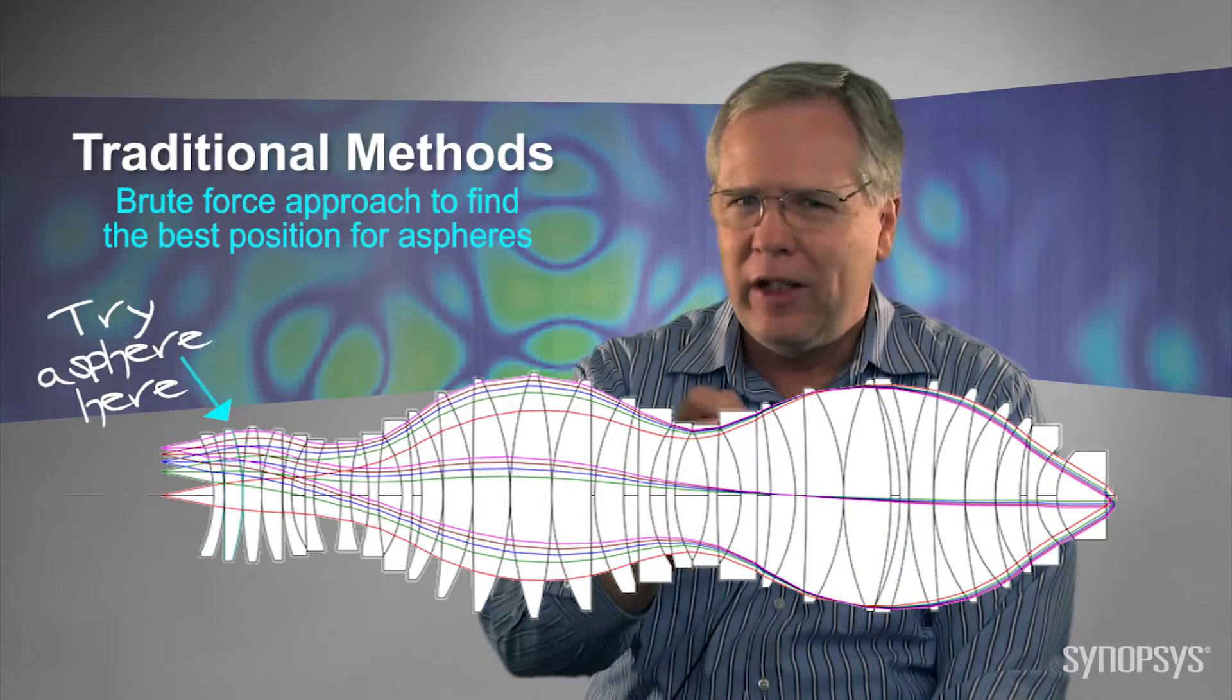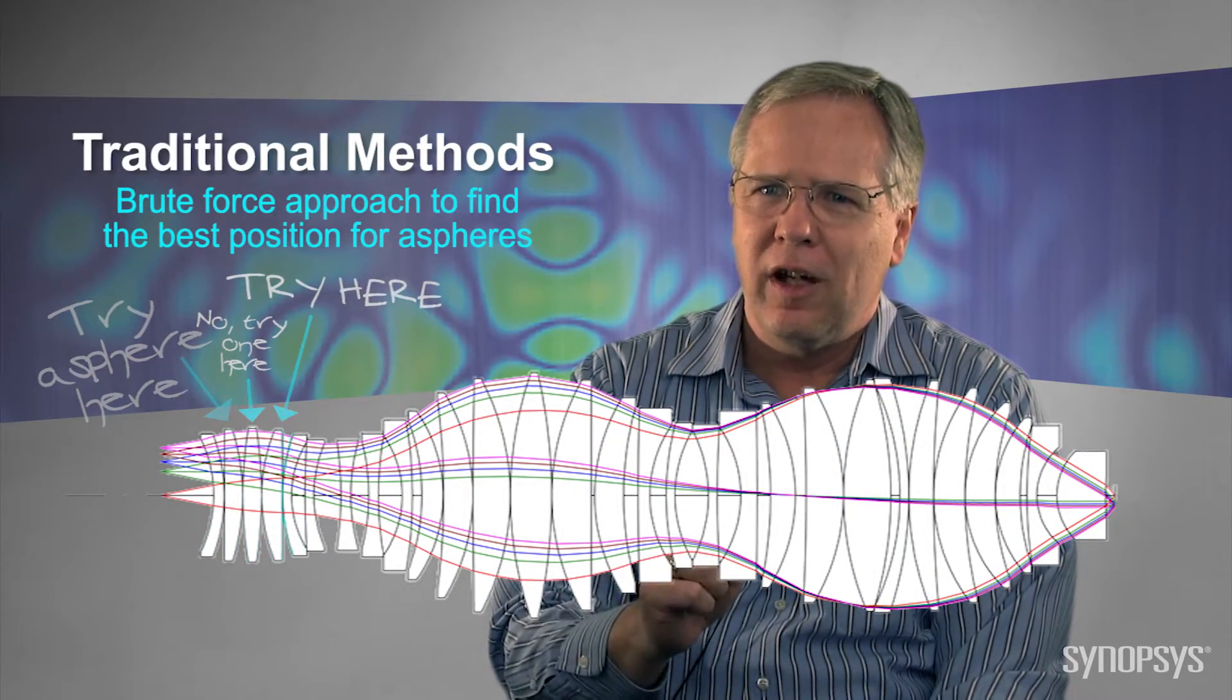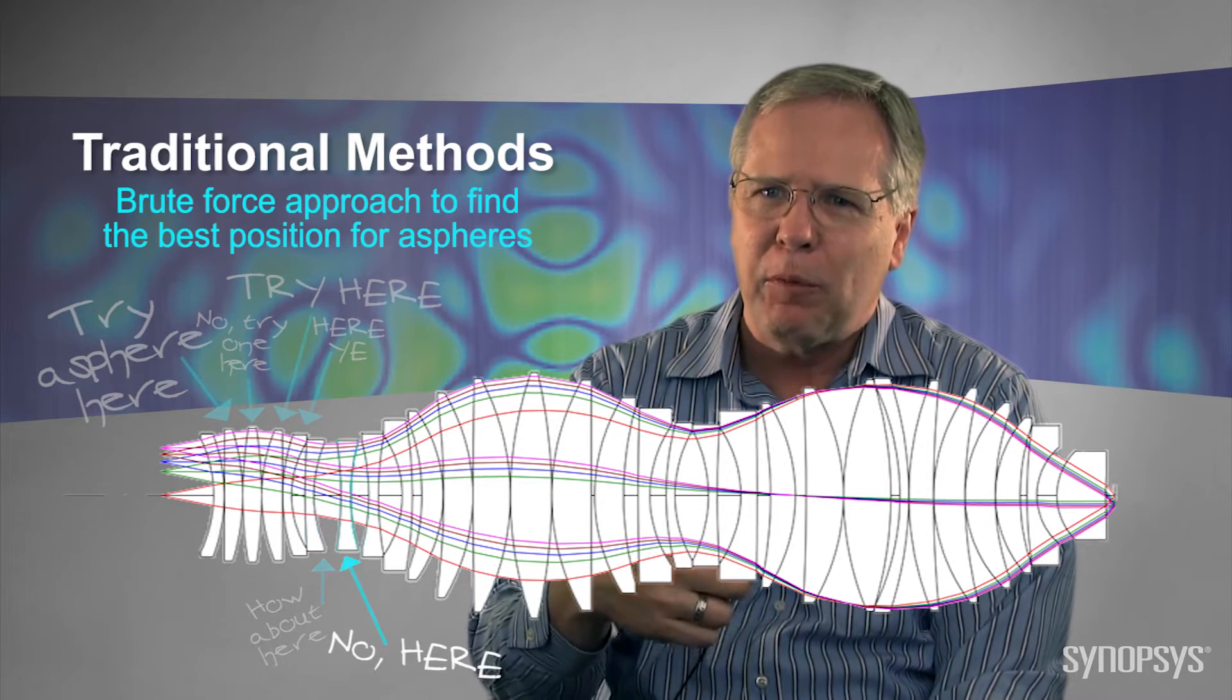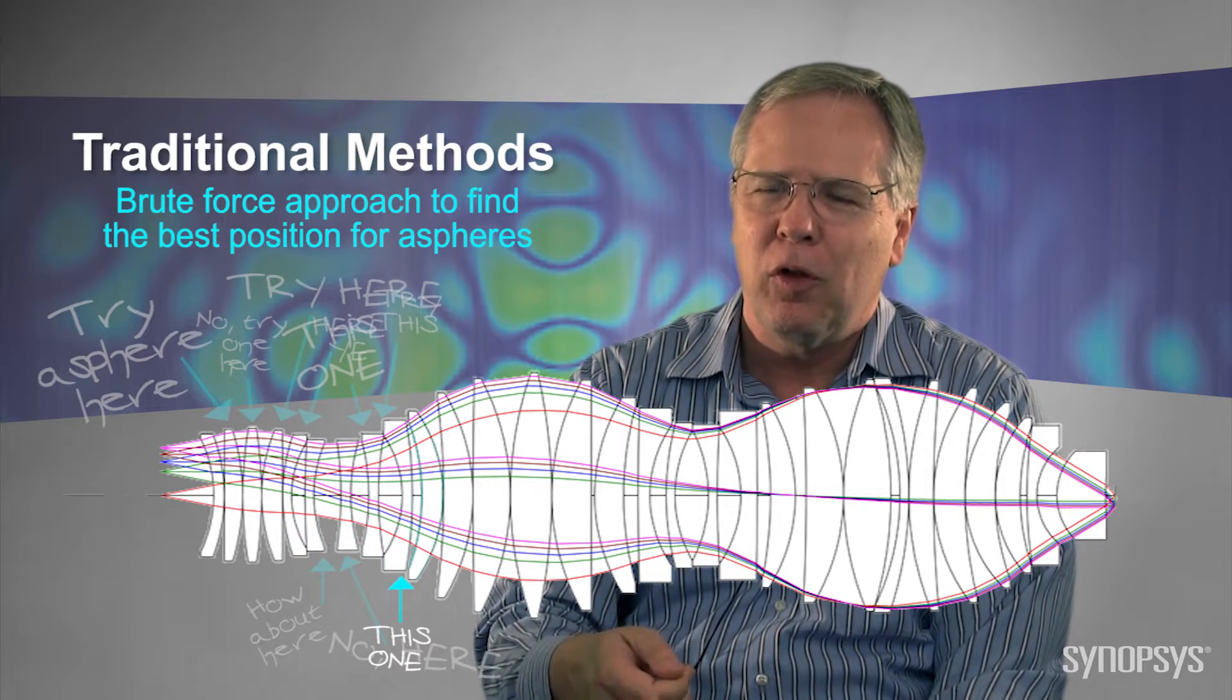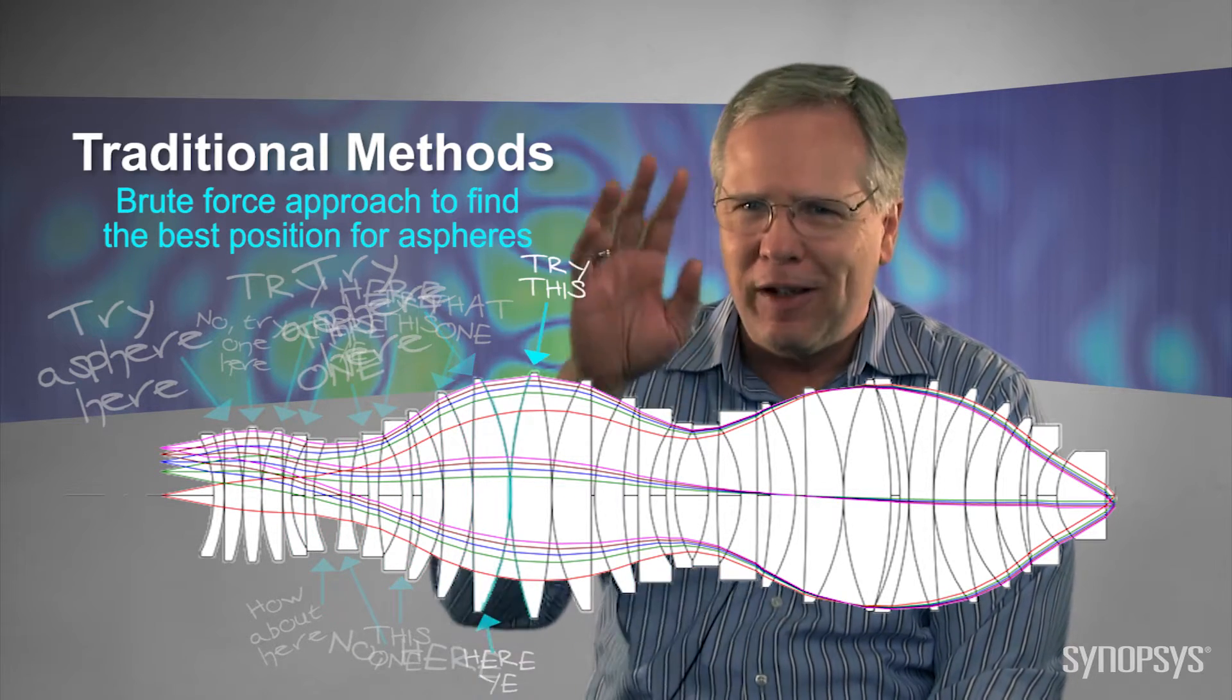Normally in a system, to find out where you'd want to put the best aspheres, you might have to go through a very tedious process of changing every surface in the lens one at a time to an asphere and then re-optimizing the system and writing down the performance.